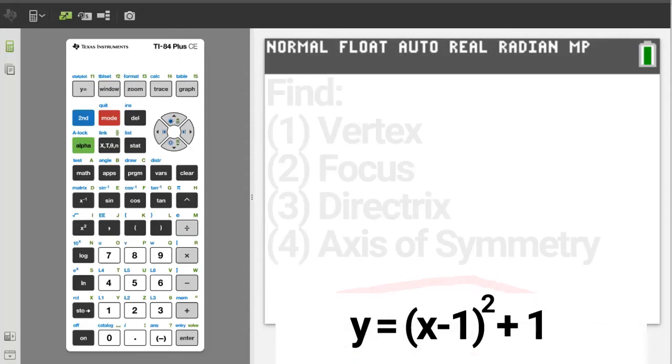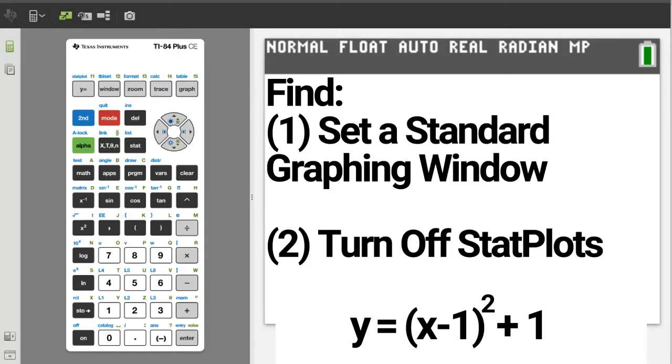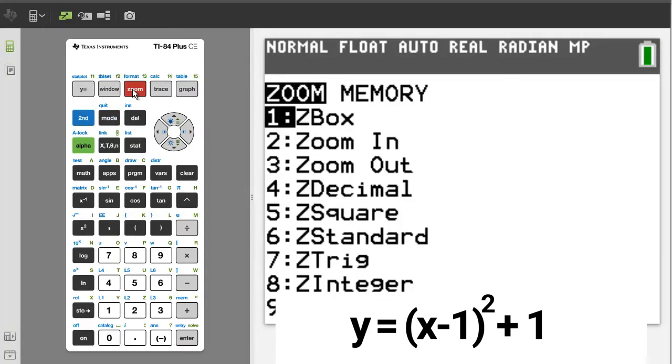Before you do any graphing on the TI-84 plus CE, you should do two things. One, set a standard graphing window, and two, turn off stat plots. To set a standard graphing window, press the zoom button. We want z standard, number 6, so press the 6 button.